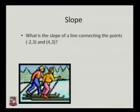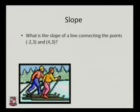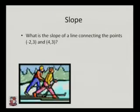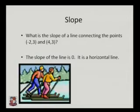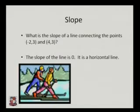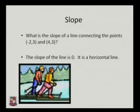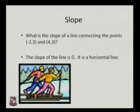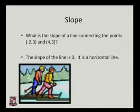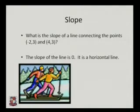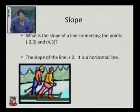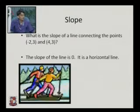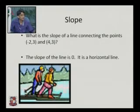What is the slope of the line connecting the points (-2, 3) and (4, 3)? It is quite clear that y1 and y2 are both 3, so the slope of the line is 0. We have already discussed that if the slope of the line is 0, it is a horizontal line parallel to the x-axis. So any line which is parallel to the x-axis has a slope of 0.